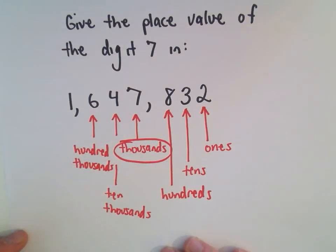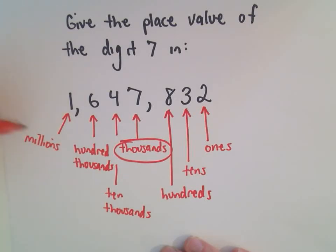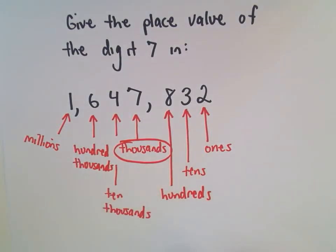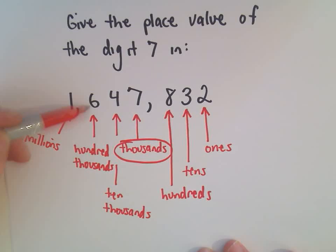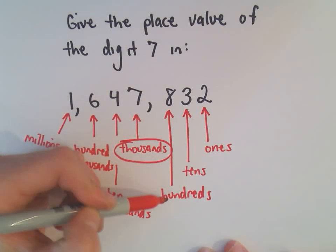And then our last digit that we have here listed, the 1 is actually in the millions place. So, again, we would actually read this number as 1,647,832.